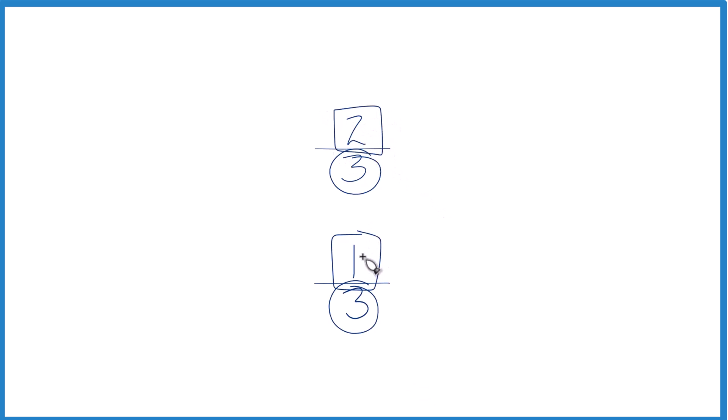Two is larger than one, and remember we have the same denominator, so we're just comparing two to one. What that means is two-thirds is larger than one-third.